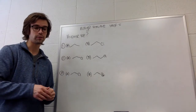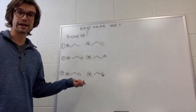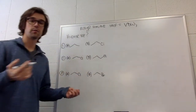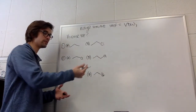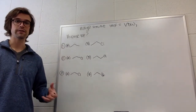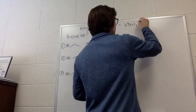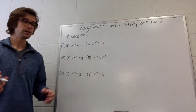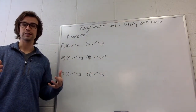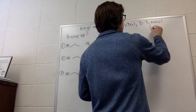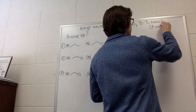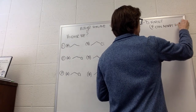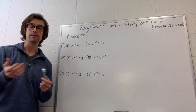So, alkyl halide intermolecular forces: everything has Van der Waals, right? So they would have Van der Waals interactions. They all have a bond from a carbon to a halogen — the halogen is more electronegative — so they all have dipole-dipole forces as well. What about hydrogen bonding? Technically, fluorine is one of those atoms that can hydrogen bond, so we'll put that in parentheses: fluorine can accept an H-bond. That would be a third type for fluorine.